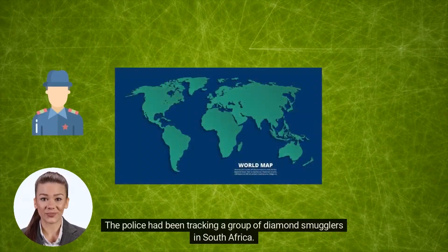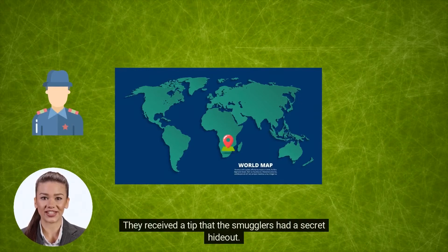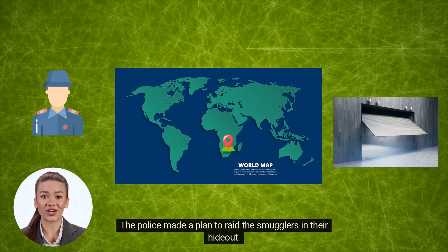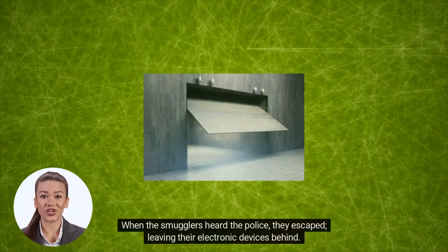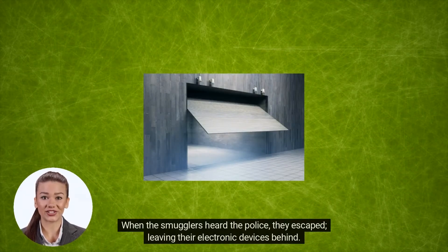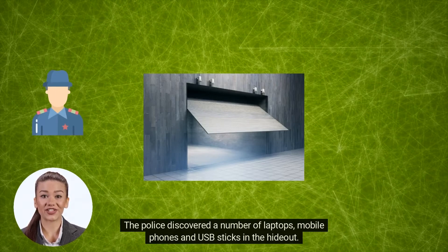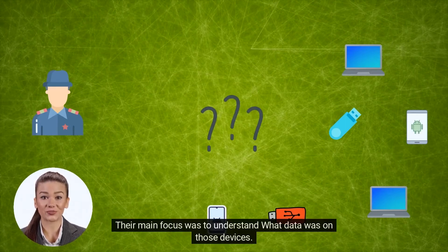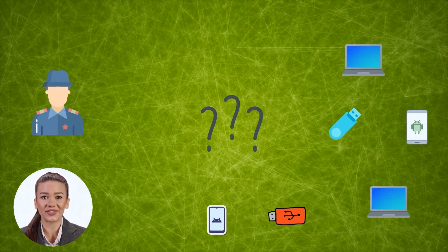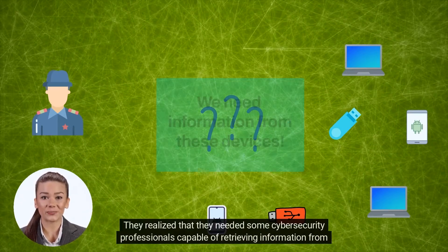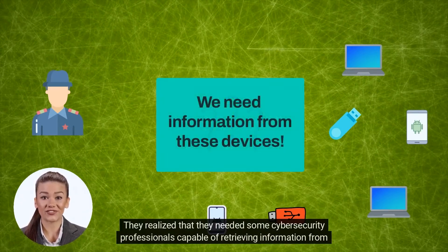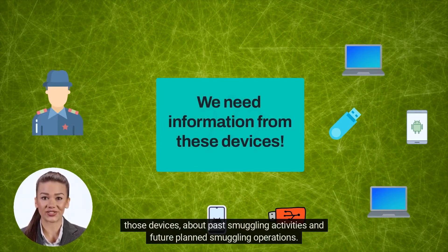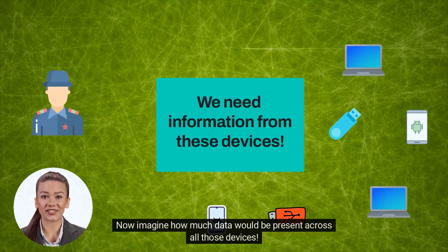The police had been tracking a group of diamond smugglers in South Africa. They received a tip that the smugglers had a secret hideout and made a plan to raid it. When the smugglers heard the police, they escaped, leaving their electronic devices behind. The police discovered a number of laptops, mobile phones and USB sticks. Their main focus was to understand what data was on those devices, and they needed cybersecurity professionals capable of retrieving information about past smuggling activities and future planned smuggling operations.